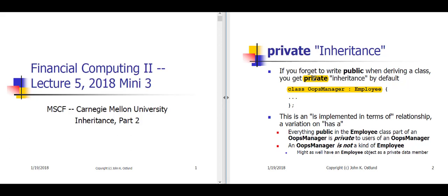I say 'inheritance' in quotes because it's not really an is-a-kind-of relationship any longer. It's better to think of oopsManager as being implemented in terms of employee, because what was public within the employee class is now going to be private through the oopsManager class. So it's not appropriate to say that an oopsManager is a kind of employee, because behaviors that an employee has are not going to be visible through an oopsManager object.